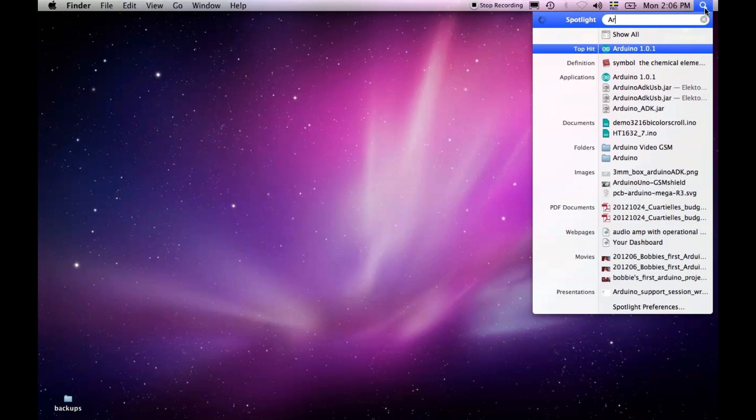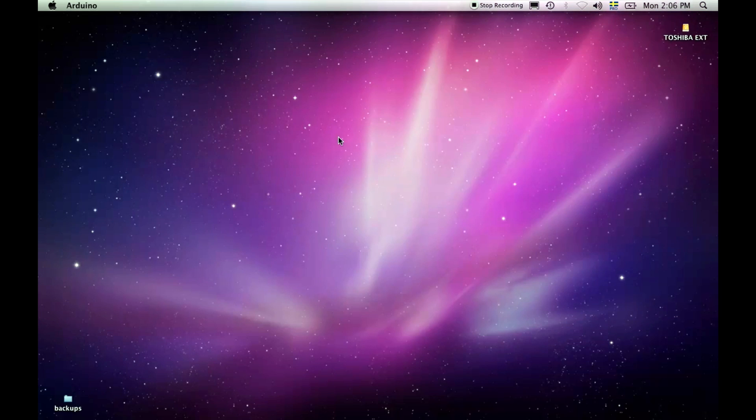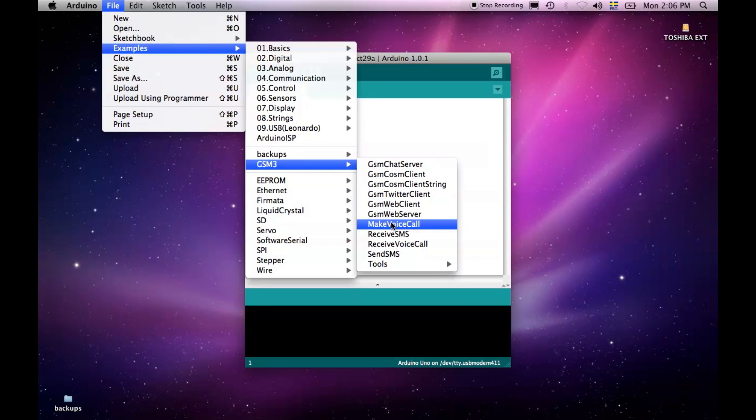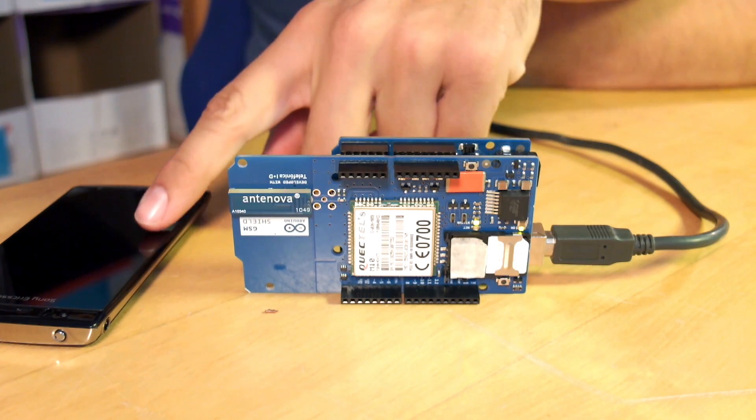We turn on the Arduino IDE, and check into examples, GSM, make voice call. The first example we are going to do is to set up a voice call between the GSM shield and the phone.